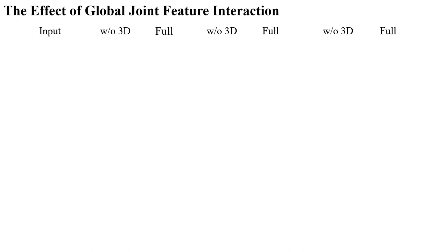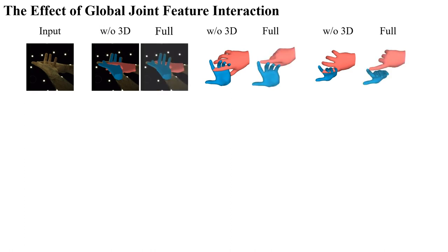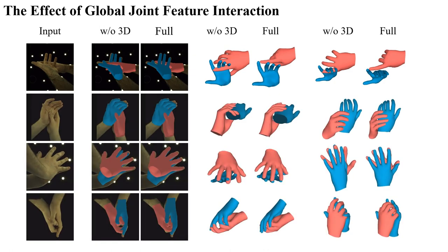First, we demonstrate the effect of information interaction. Adopting information interaction in 3D joint space can significantly improve the model's understanding of the spatial relationship between hands. As shown in the figure, the model correctly predicts the relationship between the index finger of the right hand and the fingers of the left hand. Here are more examples of hands interacting closely.